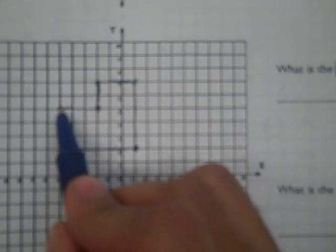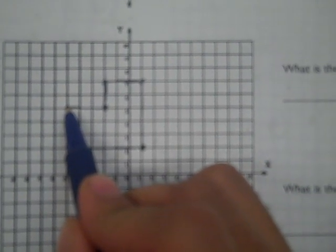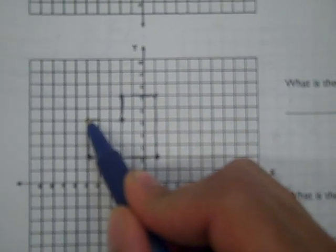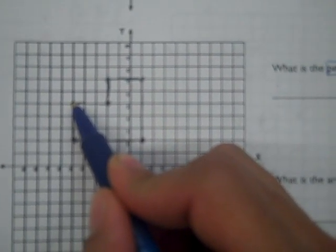Perimeter is the outer length of a shape, so I'm going to start on any point on the shape, this out over here, and I'm just going to count the length of the entire border around the shape. So I'm going to start here. My starting point is not 1. My starting point is going to be 0. When I move one space, that's when I'm going to start to say 1.